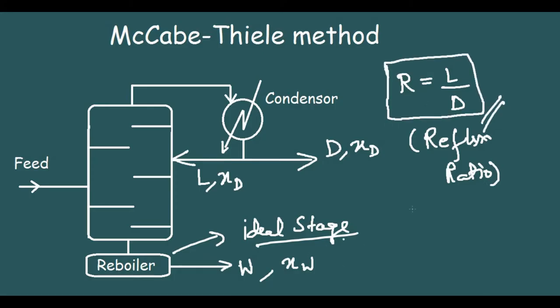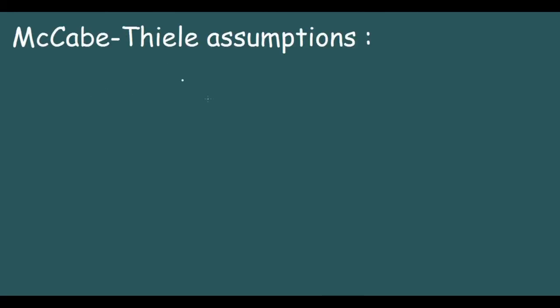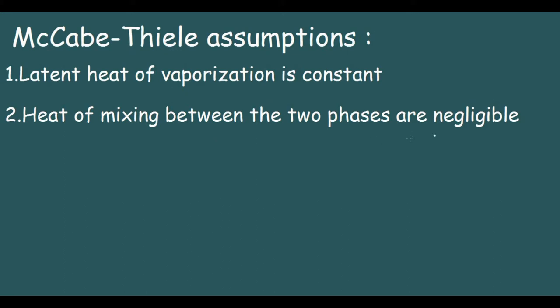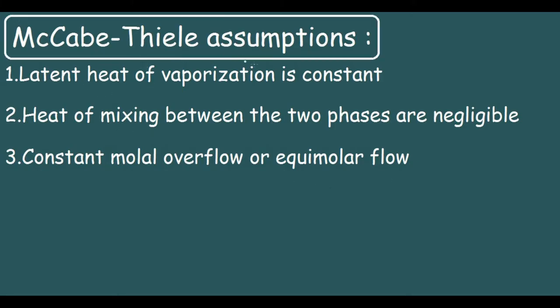So these are the things you need to keep in mind. Now we will go into the math. First let us study the McCabe-Thiele assumptions. The first assumption is the latent heat of vaporization is constant. The heat of mixing between the two phases is negligible. And last is constant molar overflow or equimolar flow.